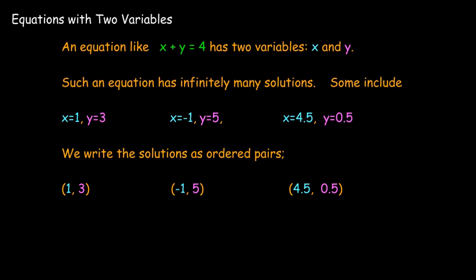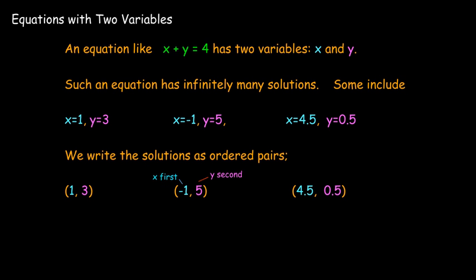When we have these solutions, we write them as ordered pairs. Meaning we put the x value first and the y value second. That's the idea of ordered. If we had different letters, we always go in alphabetical order, and then it's surrounded by parentheses. That's what we mean by an ordered pair and how we could write down these solutions.